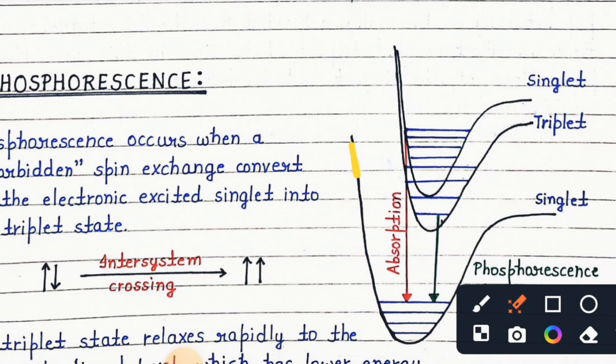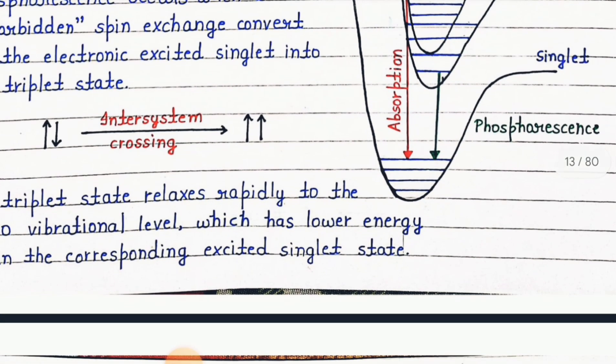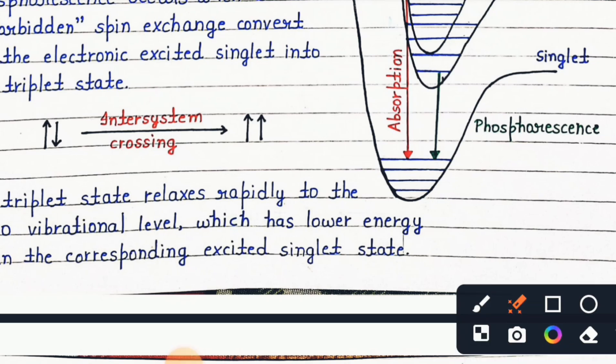It shows phosphorescence: singlet to singlet occurs during absorption. Then inter-system crossing from singlet to triplet. The triplet state relaxes rapidly to the V=0 vibrational level, which has lower energy than the corresponding excited singlet state.